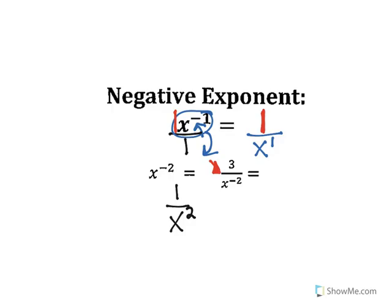If the x to the negative second is already on the denominator, and negative exponents move things down to the denominator — if it starts at the denominator, the only place it can go is up. So the three stays and the x squared moves up to the numerator. We could put 'over one' but that's really a waste of time.